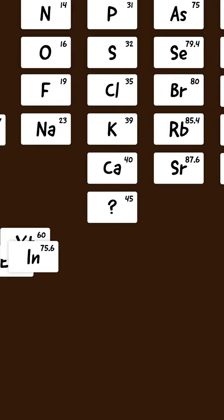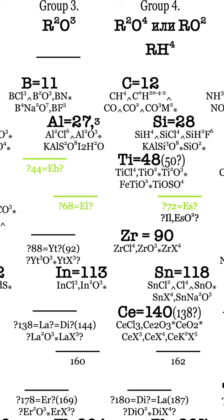From that point onwards, Mendeleev left gaps in his periodic tables to show elements that he thought existed, but just hadn't been found yet.